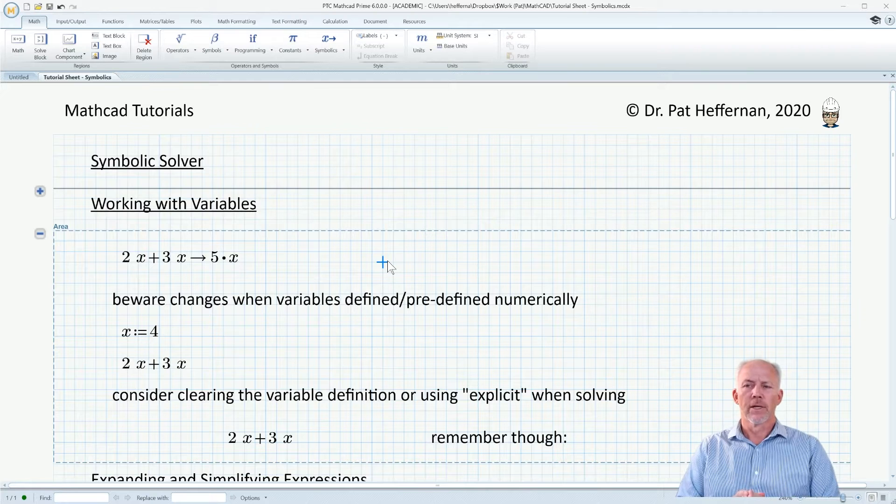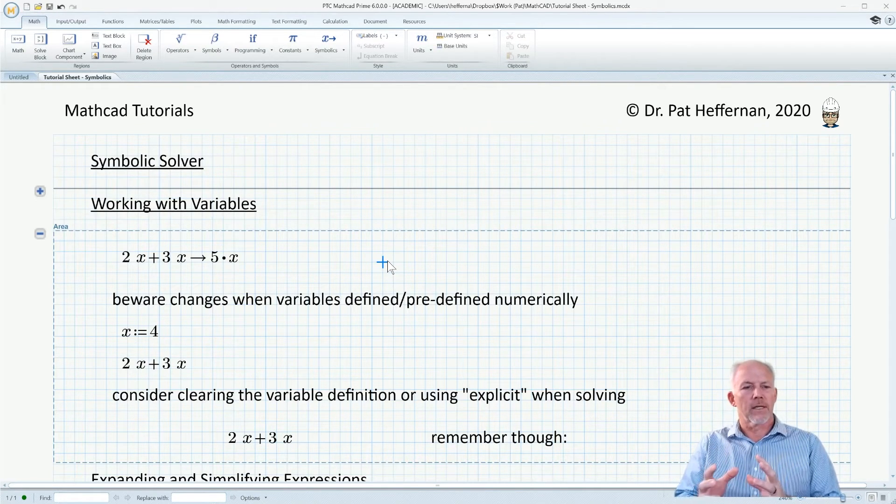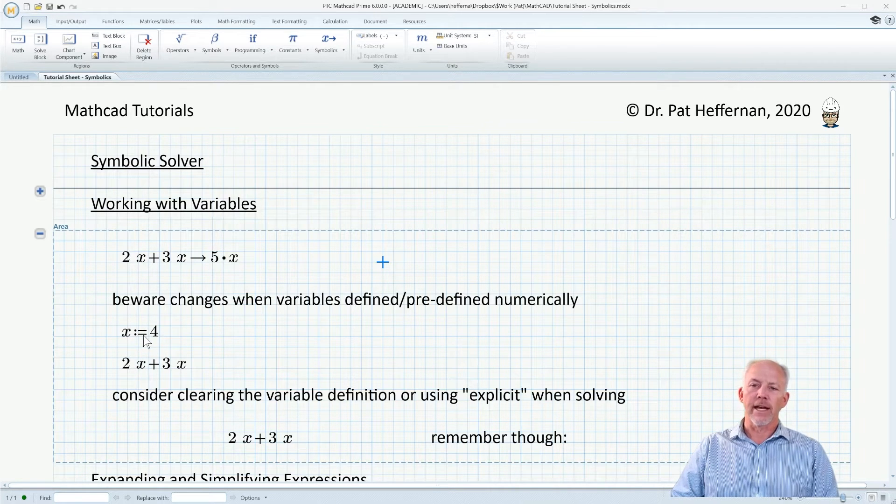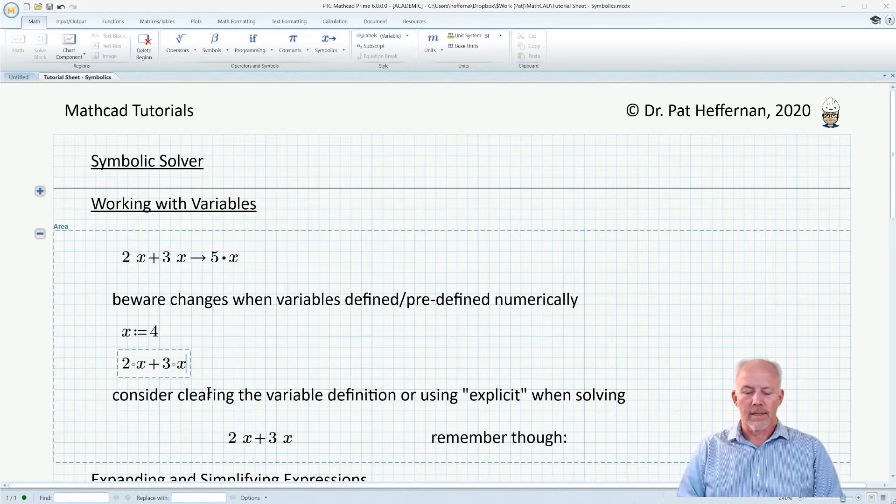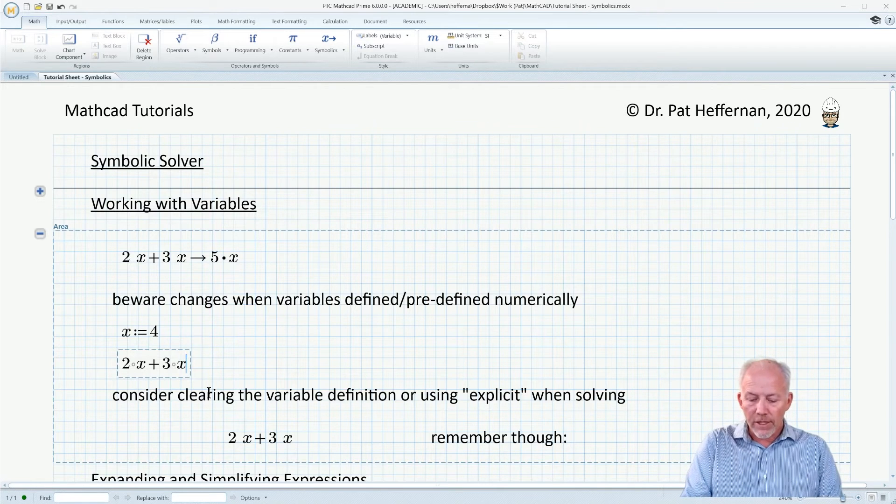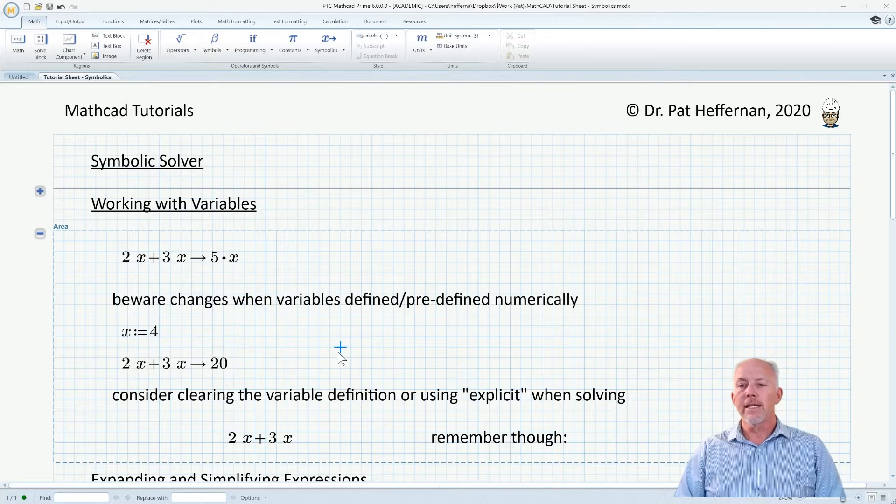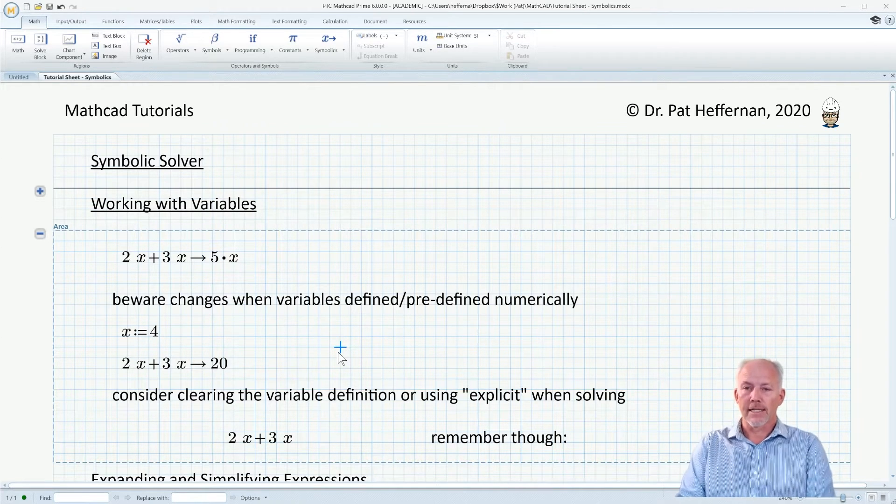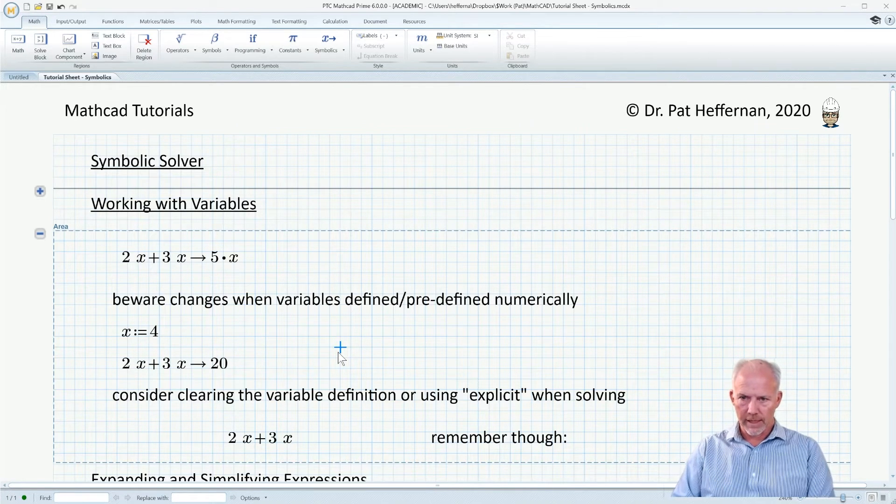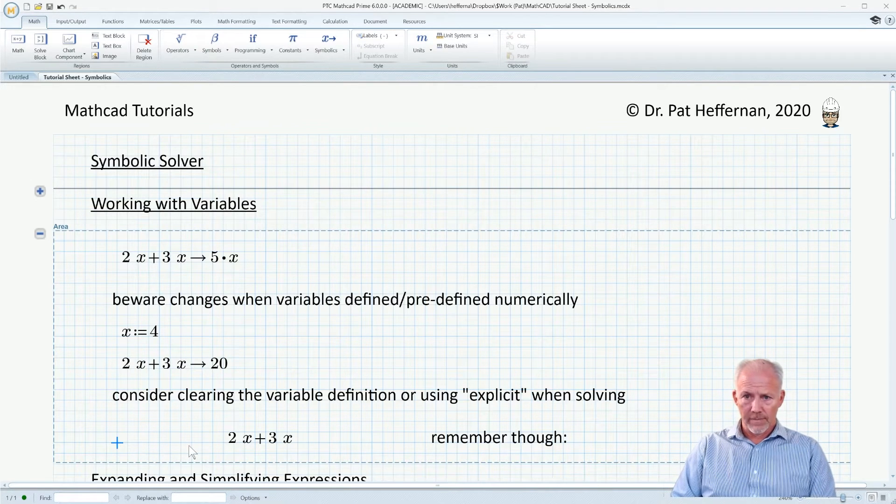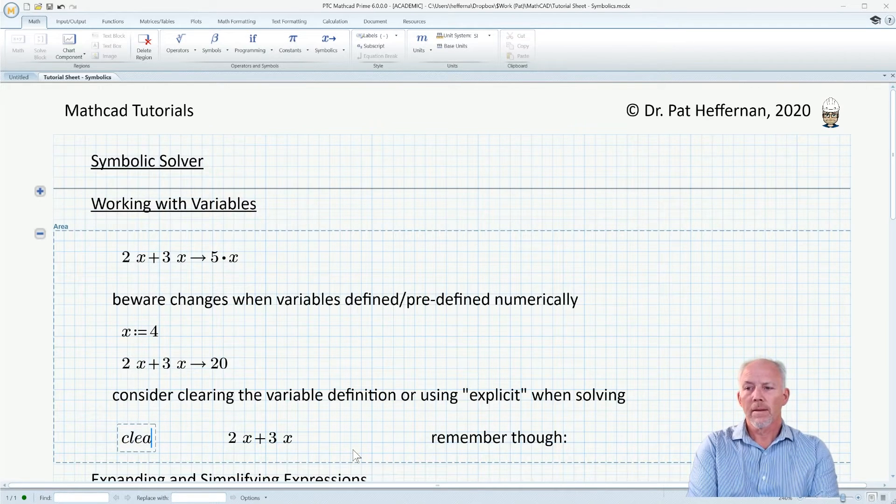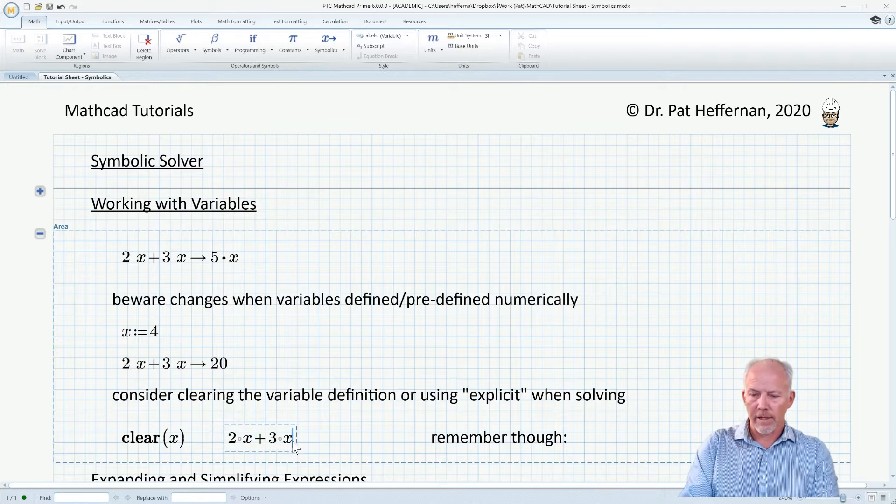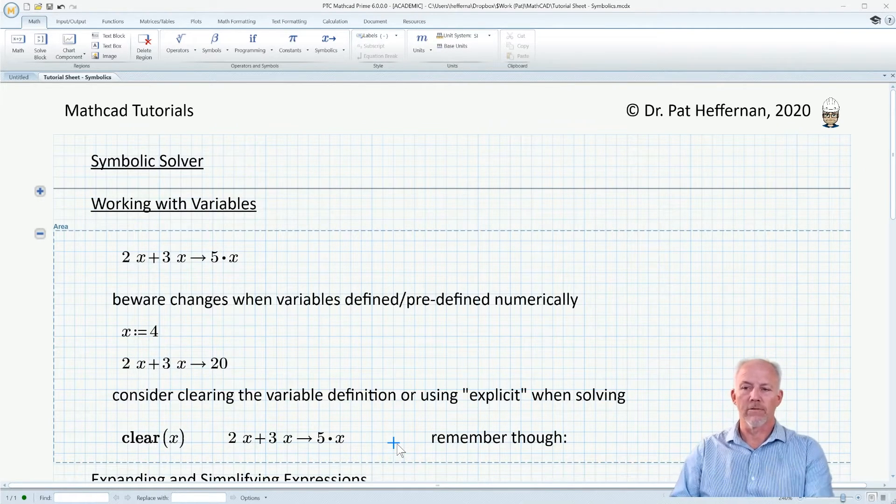Now, one thing to be really conscientious of when building a worksheet is that if x were to be defined, in this case we have x equals 4, and we look at that same equation 2x plus 3x, if we were to resolve that with the symbolic solver control period, even though we're using the symbolic solver, it's going to come back and give us a numerical solution of 20, because x is defined numerically. There's a way around that.